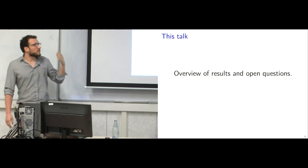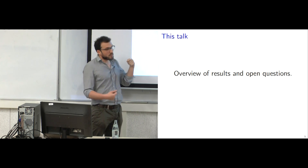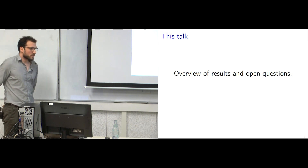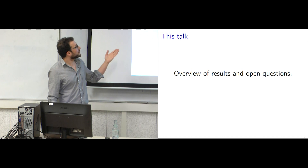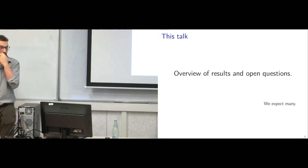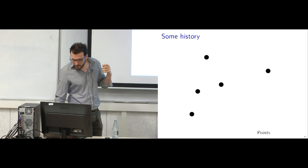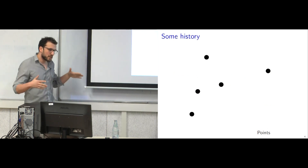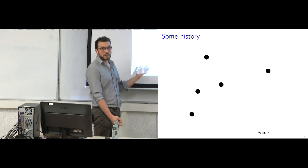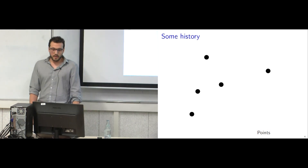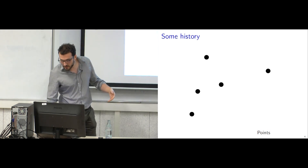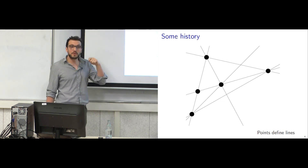I want to give you another view of the results that have been obtained by different colleagues around, and the open questions around that field. I would like to bring you into this field thoroughly and start with this question. I have a set of points in the plane — let's take the Euclidean plane. This set of points has five of them. They define some lines. If I take any two points and draw a line between two of them, I get this picture.